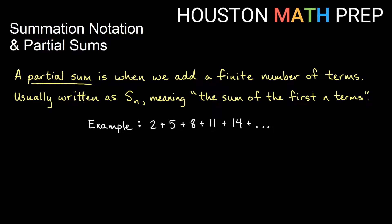A partial sum is when we add a finite number of terms — in other words, we don't go on forever. We will write a partial sum as S sub n, and this S will be capital. Usually in some books you'll see it lowercase, but in our videos we'll use a capital S. That just means the sum of the first n terms.